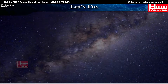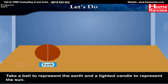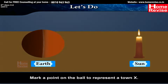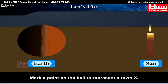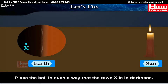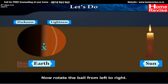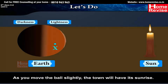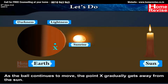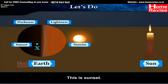Take a ball to represent the Earth and a lighted candle to represent the Sun. Mark a point on the ball to represent a town X. Place the ball so that town X is in darkness. Now rotate the ball from left to right. As you move the ball slightly, the town will have its sunrise. As the ball continues to move, point X gradually gets away from the Sun — this is sunset.